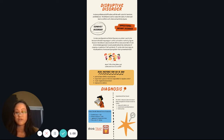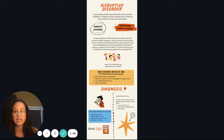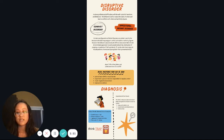For a diagnosis of ODD, we are looking for emotional and behavioral symptoms that have lasted at least six months, and they may include angry and irritable mood, argumentative and defiant behavior, as well as vindictiveness.